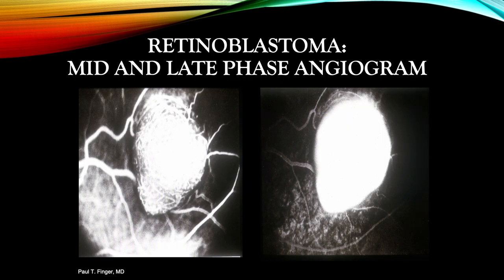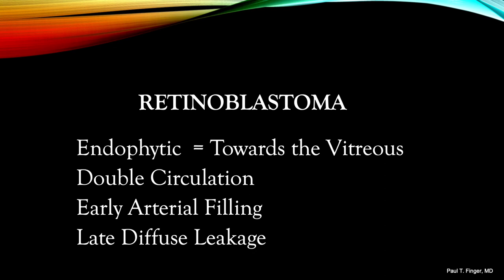In the mid-phase fluorescein angiogram, we see the tumor vessels start to be obscured by interstitial leakage of dye. In the late phase, there is a light bulb-like appearance with no discernible tumor blood vessels, and fluorescein can be seen leaking into the overlying vitreous. In summary, endophytic retinoblastomas extend into the vitreous and are not covered by the RPE; therefore, early phases of the angiogram demonstrate both tumor blood vessels and overlying retinal vasculature — called a double circulation. Late phases reveal a diffuse glow due to interstitial leakage, even into the vitreous. The early phases are the most important.